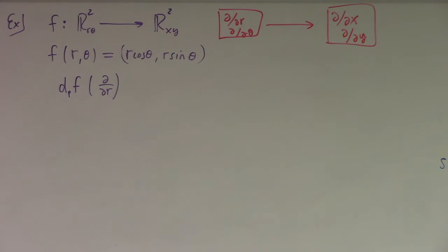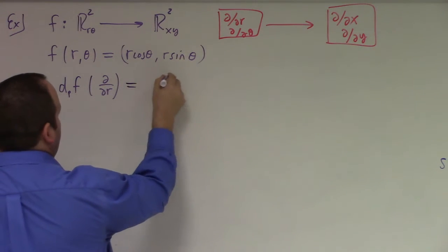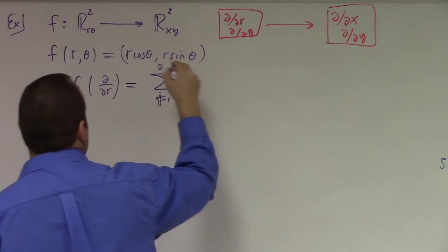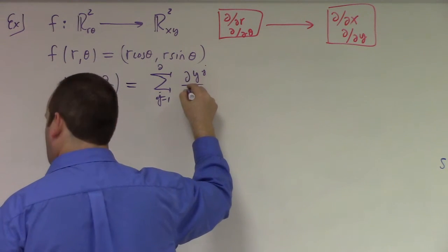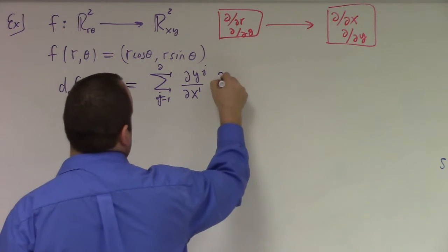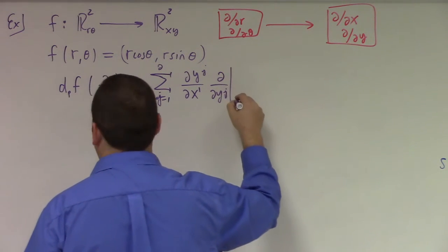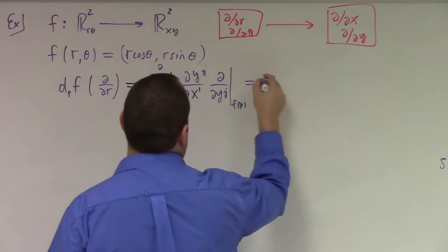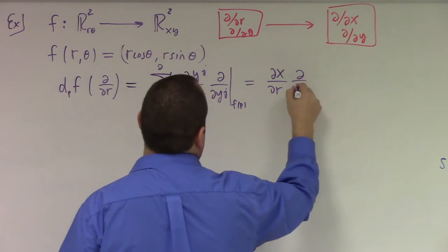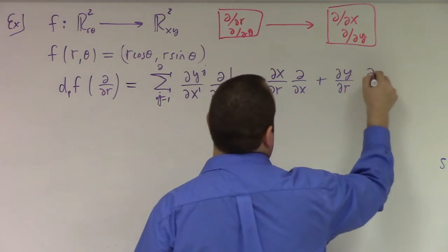This is 0 because I have partial partial x1, and my x1 is r. So this just becomes a sum over j, j equals 1 to 2, of partial yj over partial x1, times partial partial yj. What that really is, of course, is partial x over partial r times partial partial x, plus partial y over partial r times partial partial y.